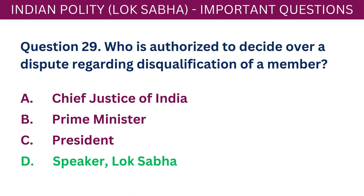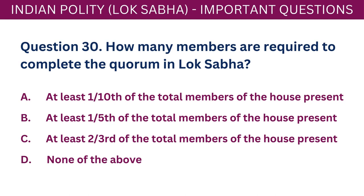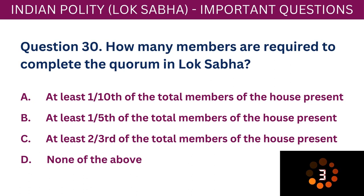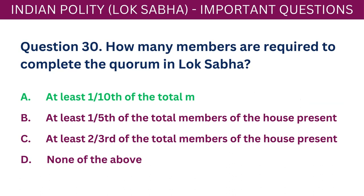Question 30: How many members are required to complete the quorum in Lok Sabha? A. At least one-tenth of the total members of the house present. B. At least one-fifth of the total members of the house present. C. At least two-thirds of the total members of the house present. D. None of the above. The correct answer is A - at least one-tenth of the total members of the house present.